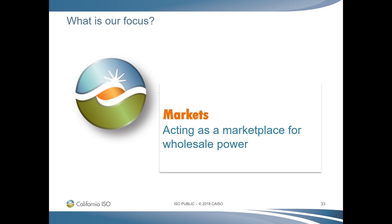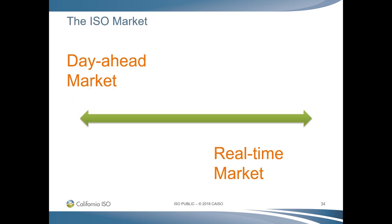The ISO wholesale market is comprised of distinct day-ahead and real-time processes. The day-ahead market enables parties with bilateral agreements to schedule their contracted supply and demand into the market at a minimum of 24 hours in advance. It also enables suppliers to offer excess supply in the form of energy or ancillary services such as reserves. The day-ahead market includes an integrated forward market that provides a one-stop shop for trading and analyzing electricity bids, transmission capacity, and reserves. The ISO's full network model analyzes generation and transmission schedules submitted a day in advance to better manage or avoid real-time bottlenecks.